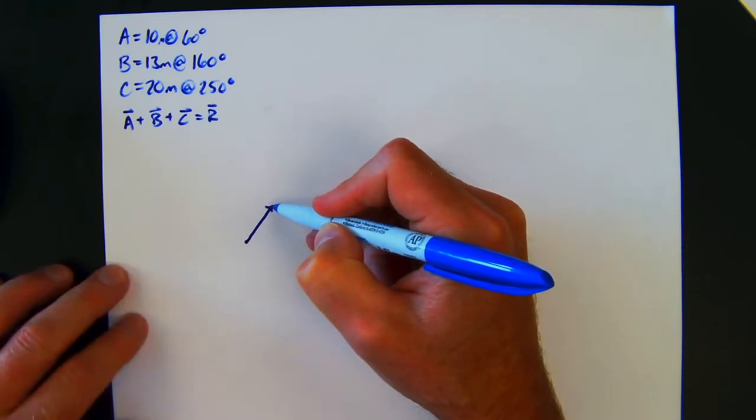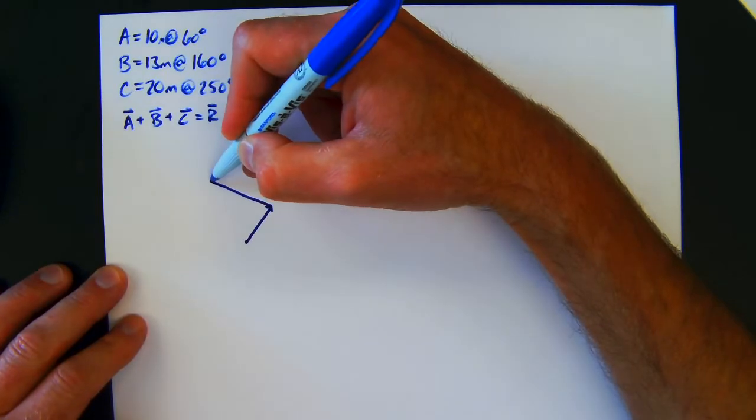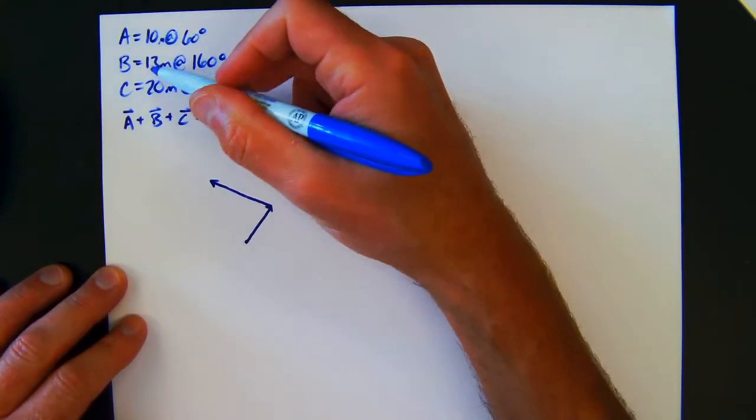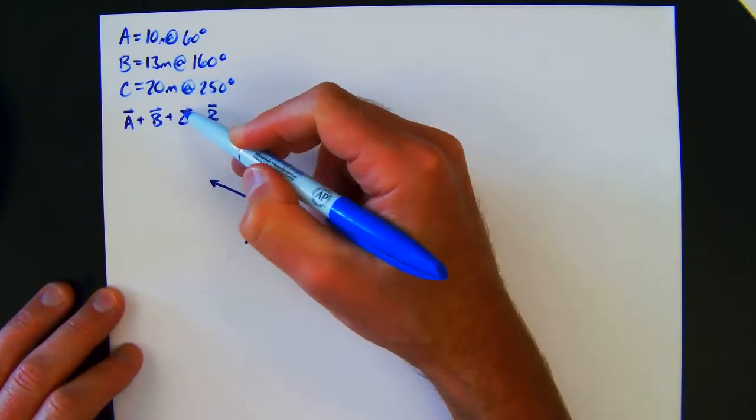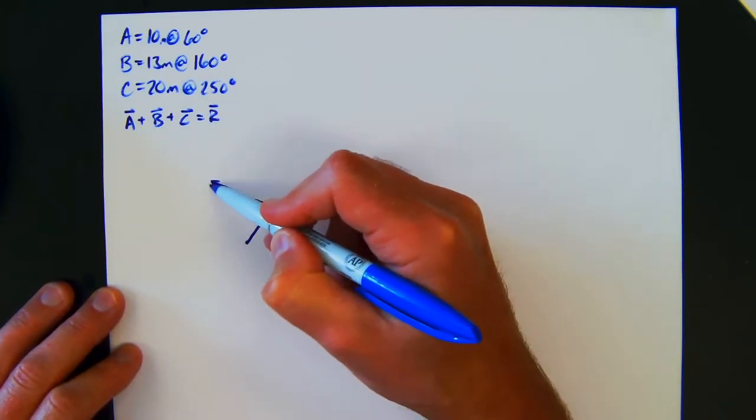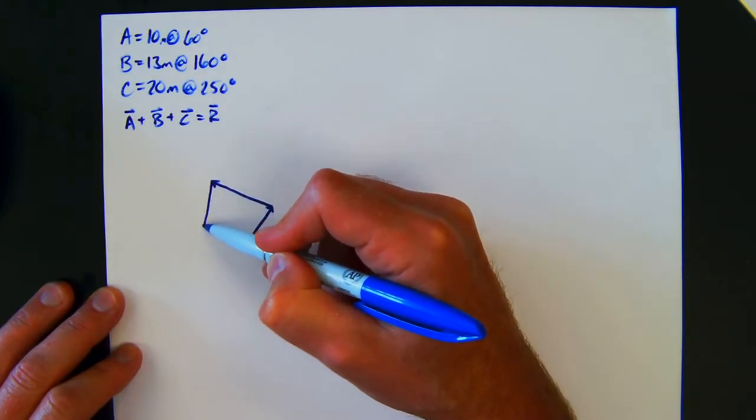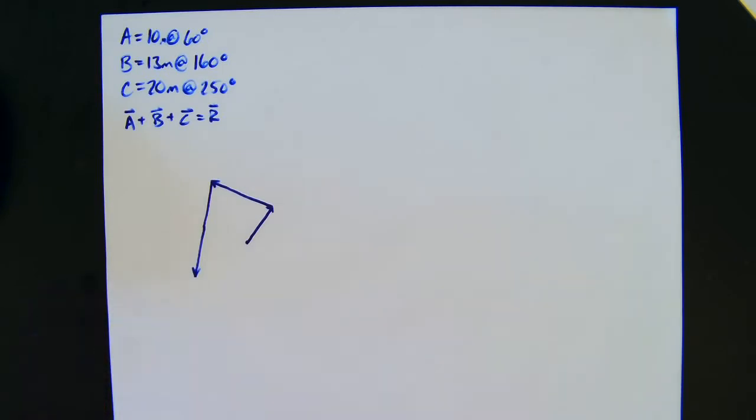And I'm going to go 160 degrees from that, so I'll come over this way 160, slightly longer because it's 13 instead of 10. And then again, if I picture a new coordinate system here, I'm going to be coming down at 250 degrees for 20, or roughly twice that. So if I picture that being part of that and then that being the other part, now when I look at the picture I can easily determine what the resultant is going to be.